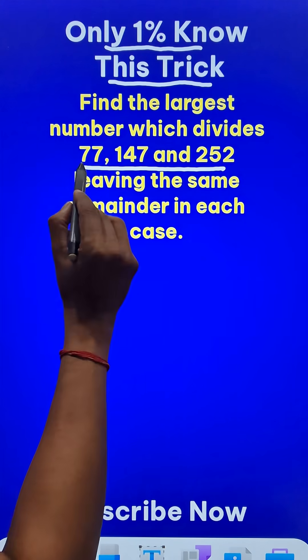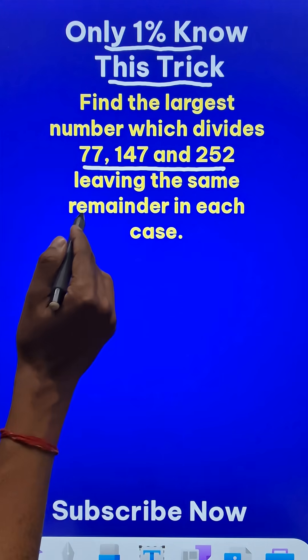So how do you find that largest number which divides the given numbers and leave the same remainder in each case?